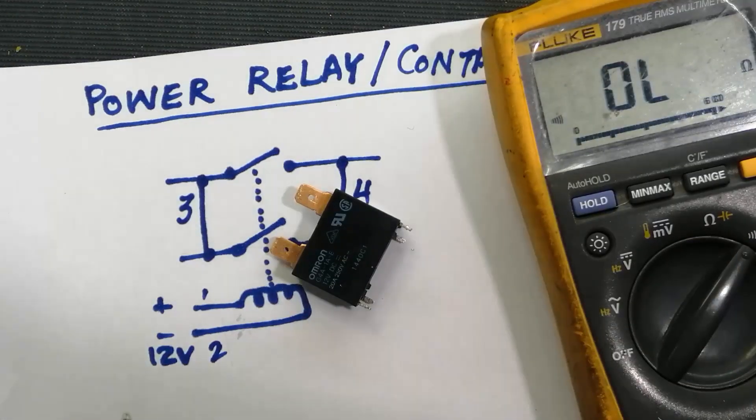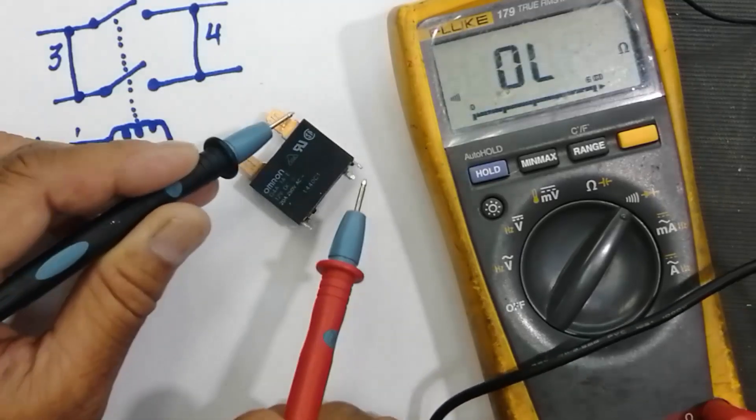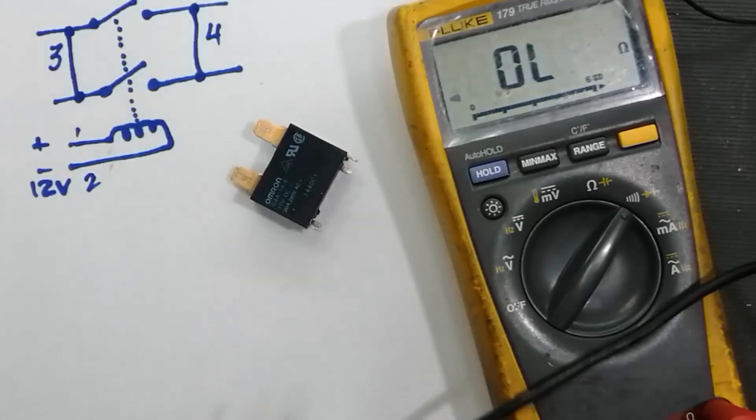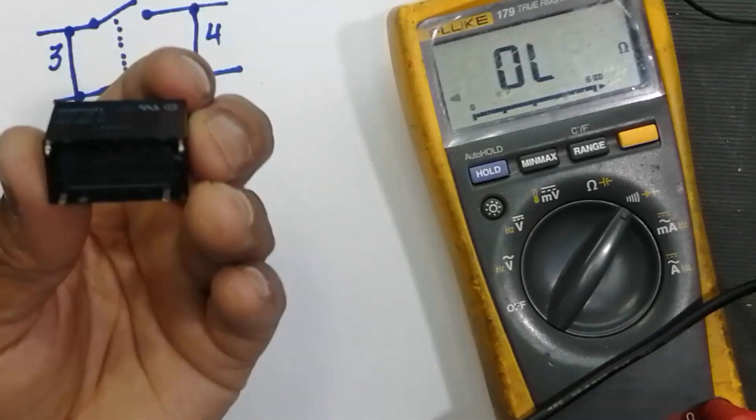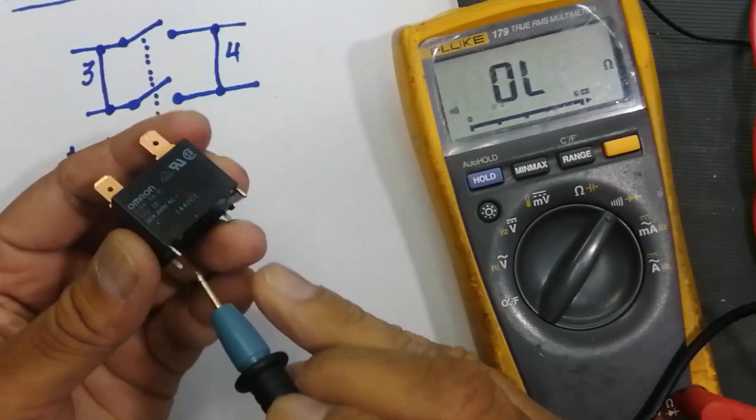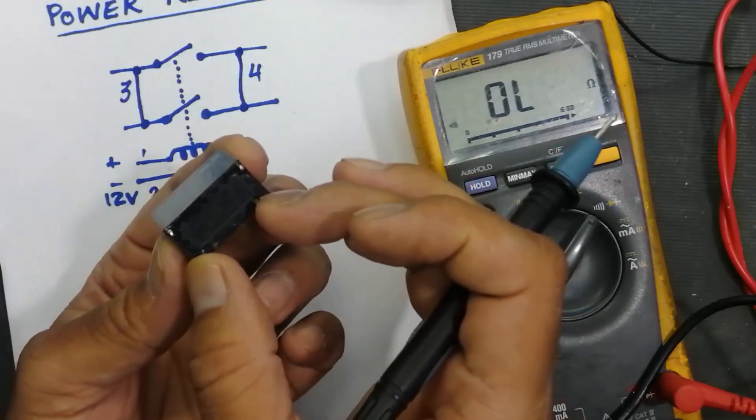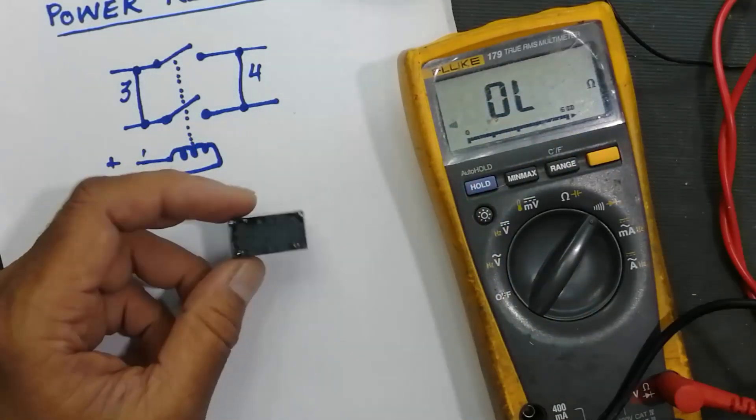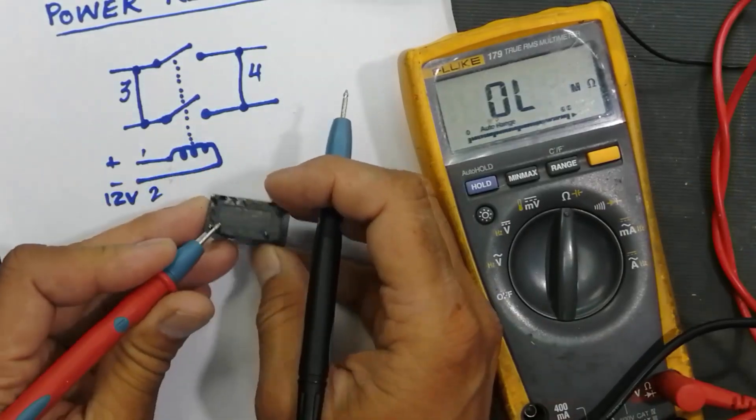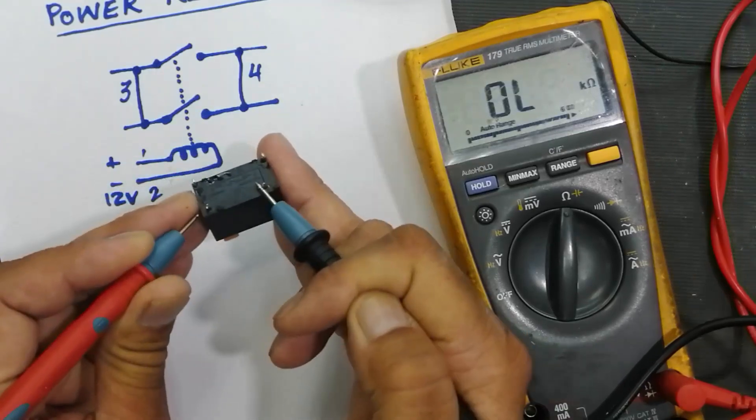Set multimeter to continuity at one point and one inner point. This should give continuity. Because this point is connected with this one. So this point is connected with this one and this point is connected with this one and these two coil points are separate. You can test it by ohm meter. Set it to ohms. It is 161 ohm.